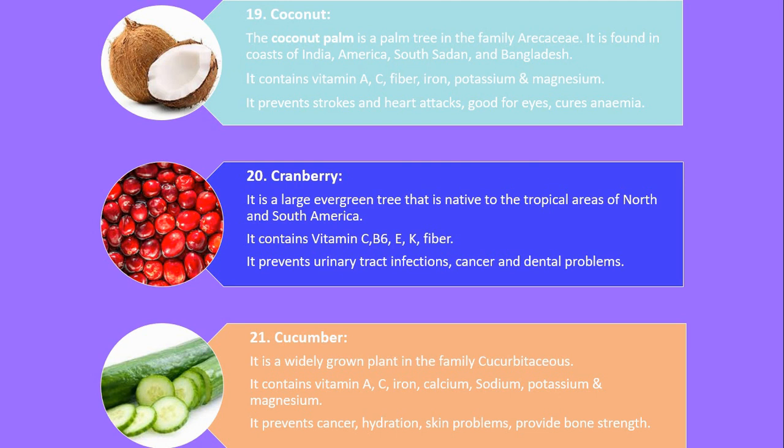Number 21. Cucumber. It is a widely grown plant in the family Cucurbitaceae. It contains vitamin A, C, iron, calcium, sodium, potassium and magnesium. It prevents cancer, provides hydration, cures skin problems, and provides bone strength.